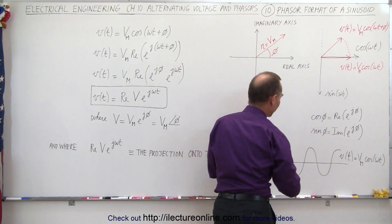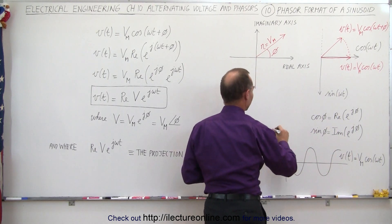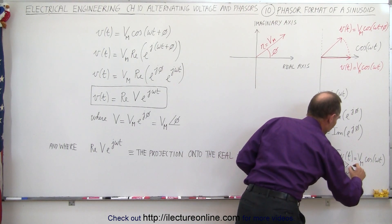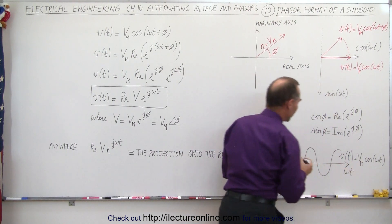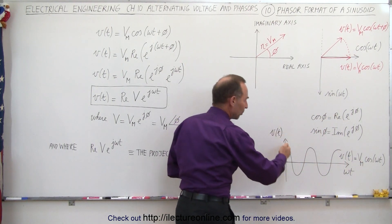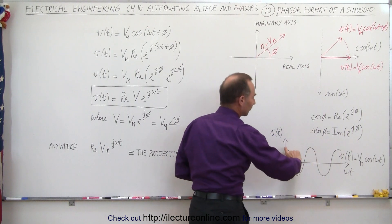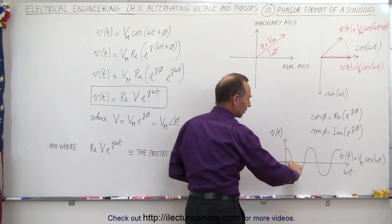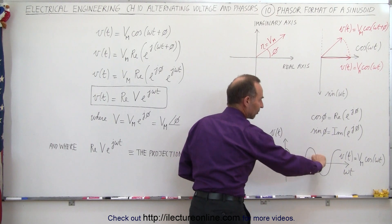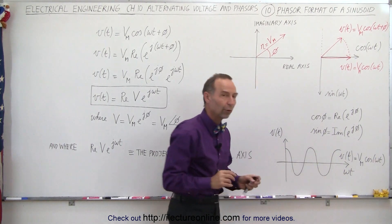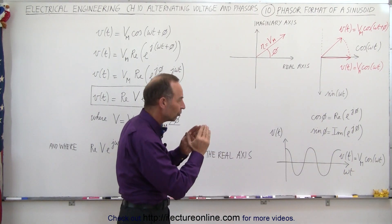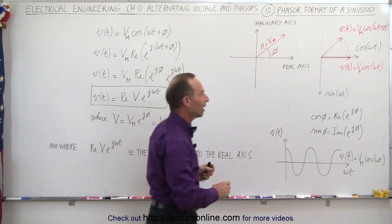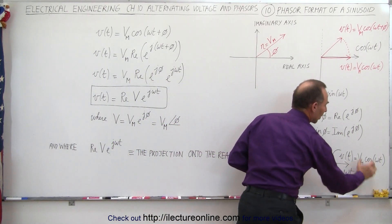Here again we have that graph, where on the vertical axis we have v of t, and on the horizontal axis we have omega t. You can see that for a different time we have different magnitudes of the voltage — the maximum value, zero, the negative maximum, zero, positive maximum, and so forth. So the voltage always changes with time, and that was represented by this equation.